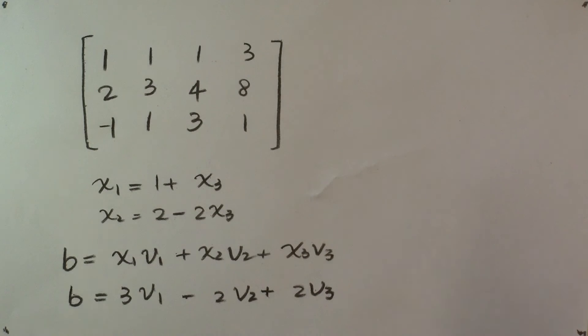So that is one possible way to express b in terms of the three vectors. If we pick x₃ = 1, then x₁ = 2 and x₂ = 0.